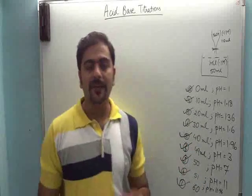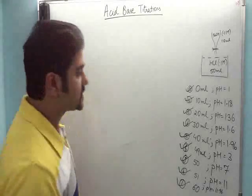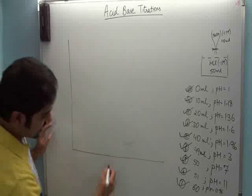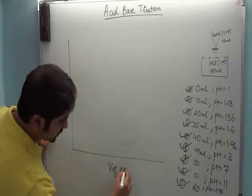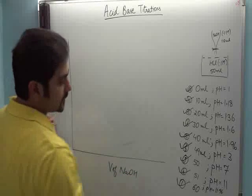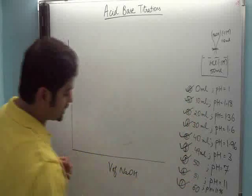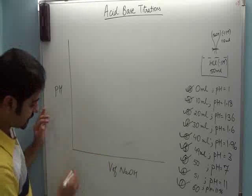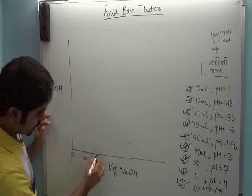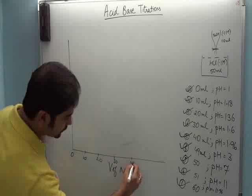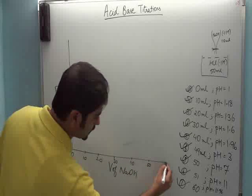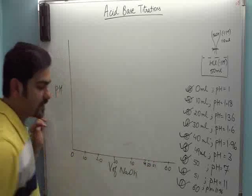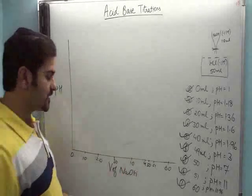Titration curve mein X aur Y axis pe kya kya rahega. X axis pe rahega volume of NaOH jo aap upar se daal rahe ho — zero ml, 10 ml, 20 ml, etc. Aur Y axis pe rahega pH. Toh ek rough sa curve banate hain. 50 ke aas paas humne 49 aur 51 dono points liye hain, inki importance ke liye hum thodi der mein samjhenge.